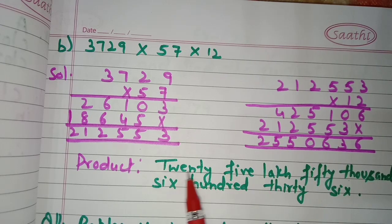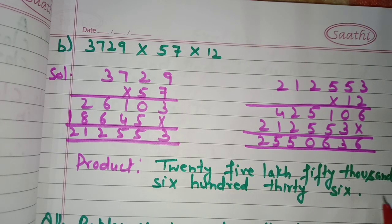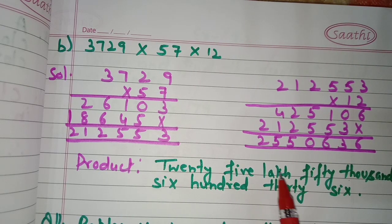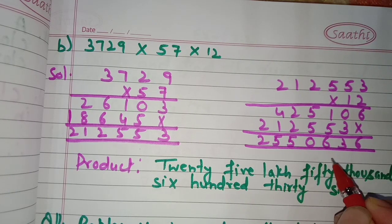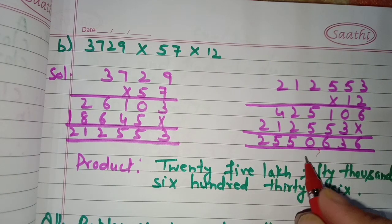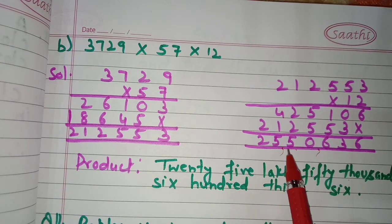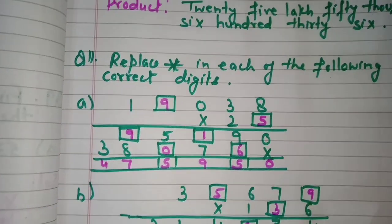Now we write 25,50,636 in words. If you cannot read the number properly, put commas: starting from the ones place, separate three digits for the units period, then two digits for thousands, and the remaining digits for the lakhs period. This helps write the number correctly in words.